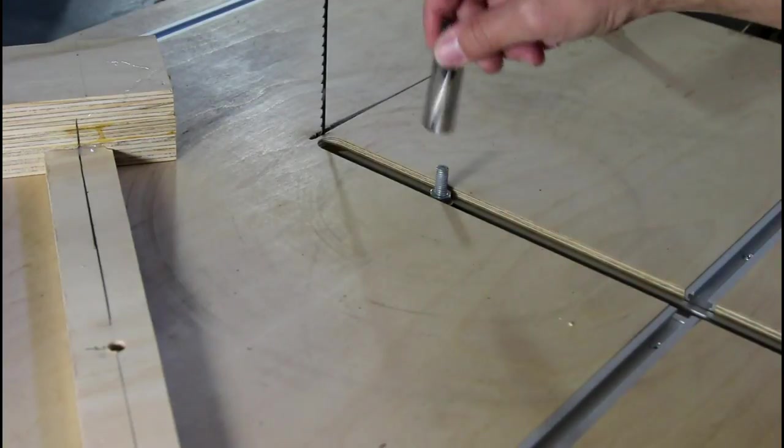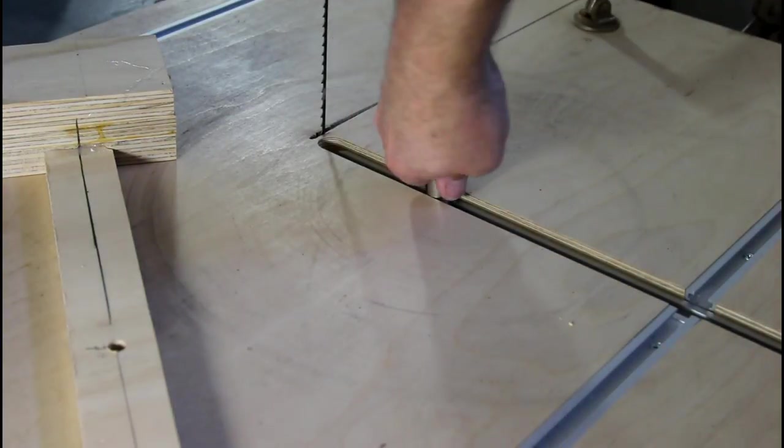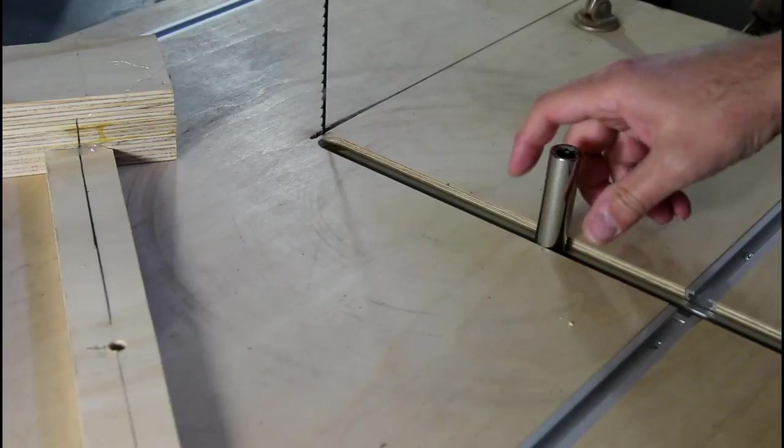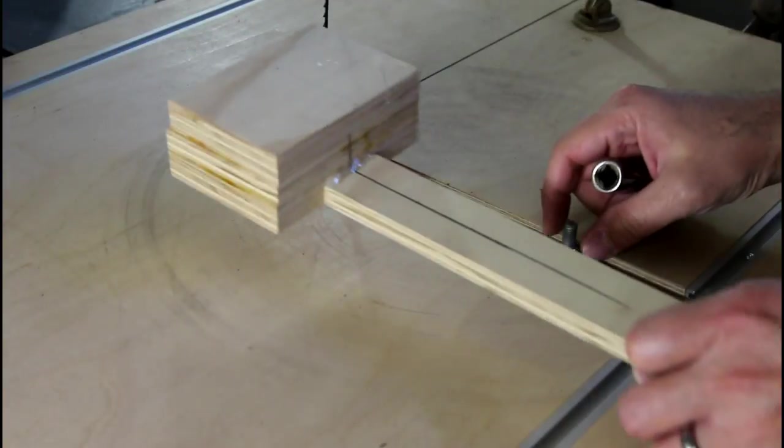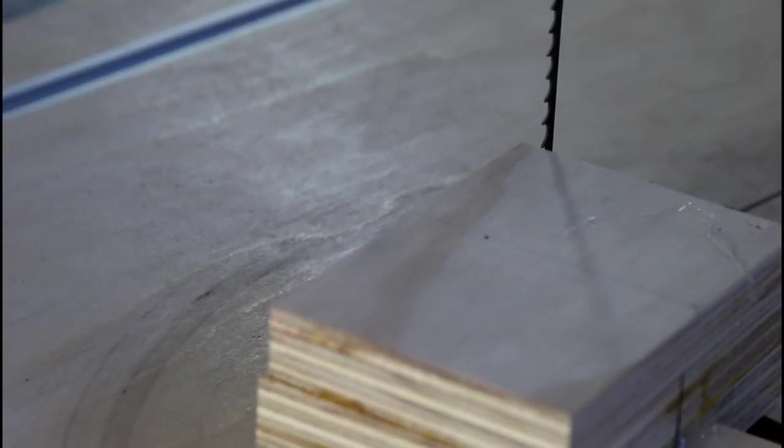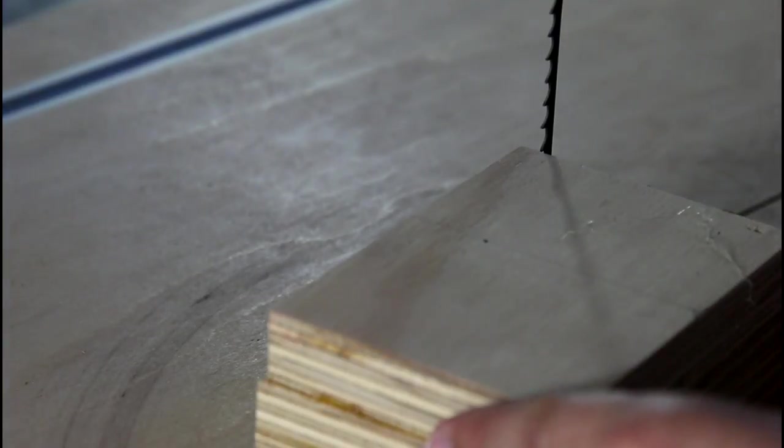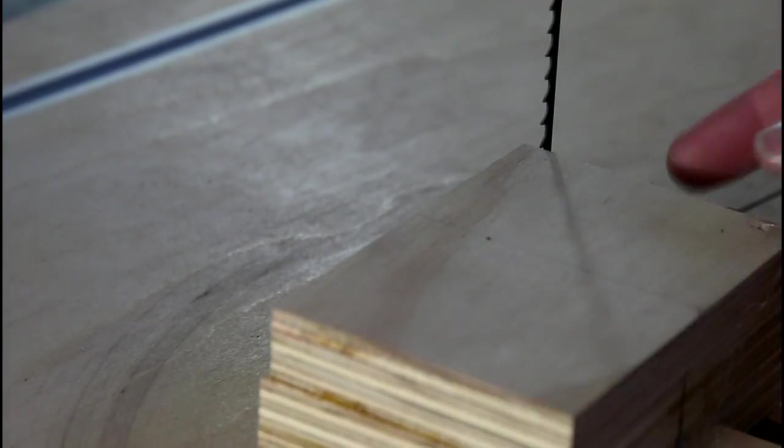A half inch socket fits around there, loosens it up, remove our pivot point. I want to just bite a little bit, maybe an eighth of an inch, out of the end of this piece here.